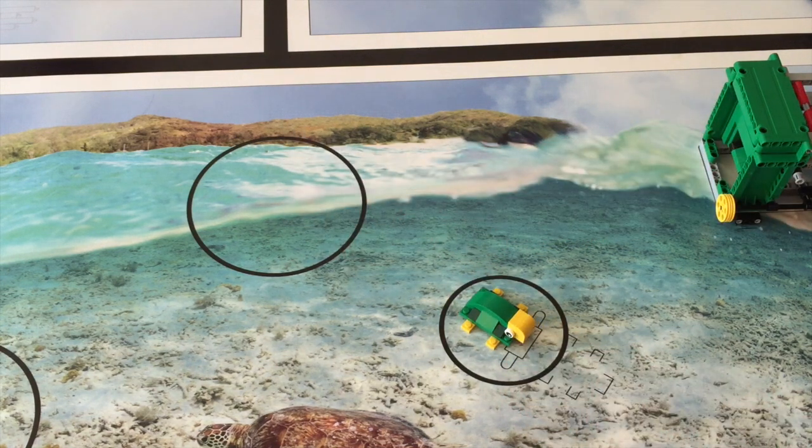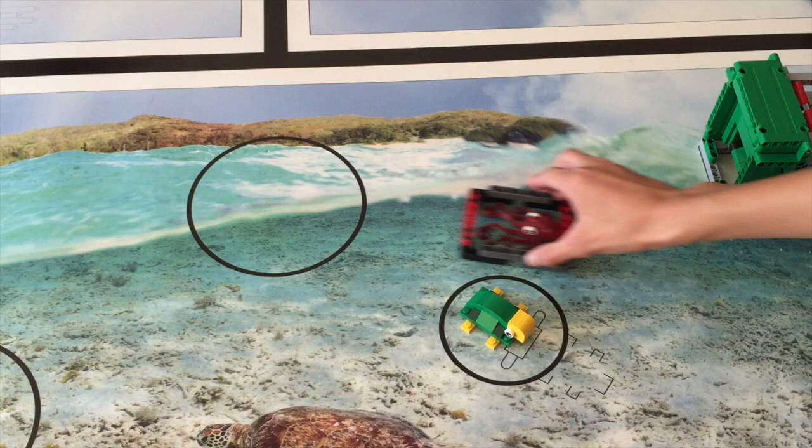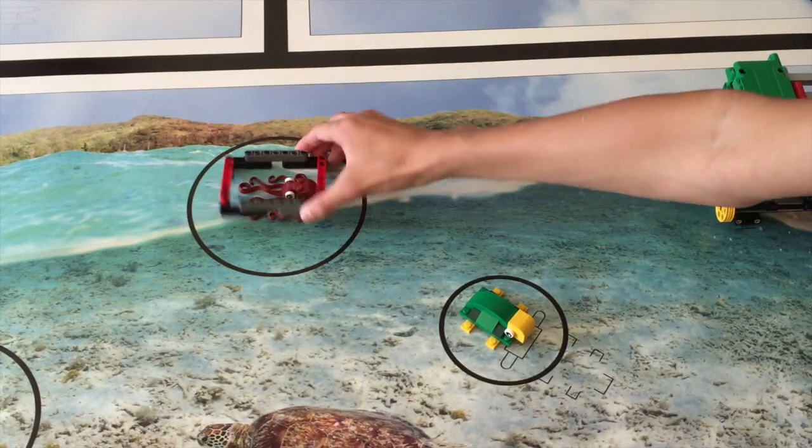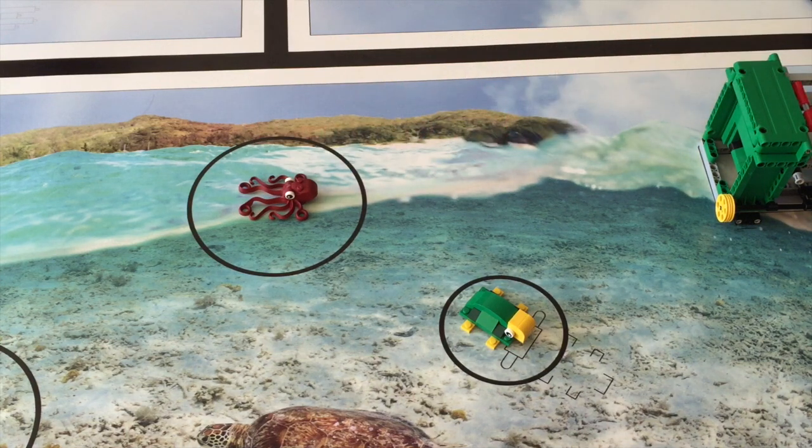For the octopus, you can have a box with the octopus inside connected to a motor. The robot can bring the box with the octopus into a circle, and the motor can lift the box up and leave the octopus there.